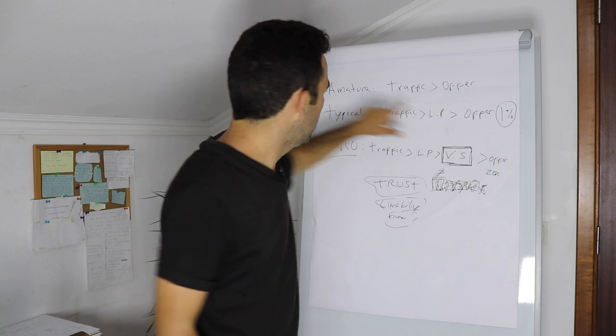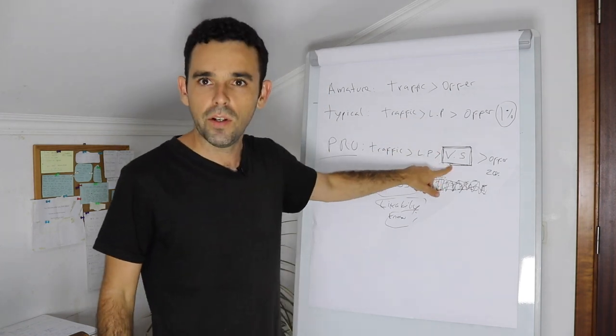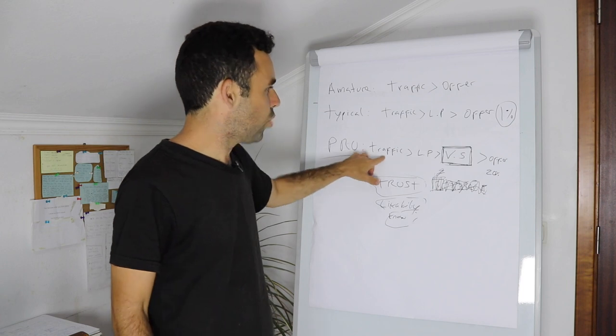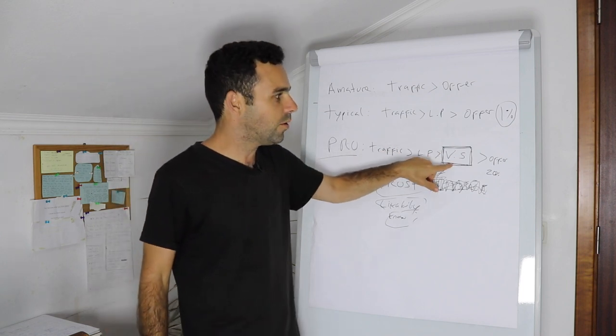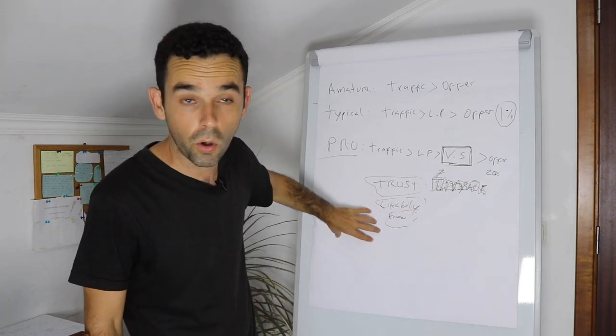Now, this is the pro method. The pro method has the value series. The pro method is traffic to a landing page, then to a value series and then to the offer. This converts up to 20% or more.